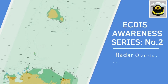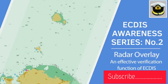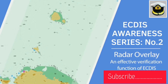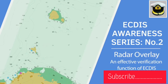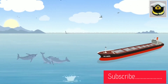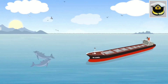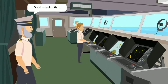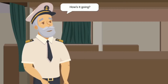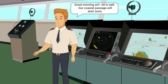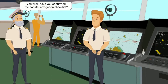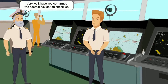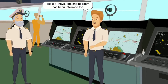ECTIS Awareness Series number two: Radar Overlay — an effective verification function of ECTIS. Good morning, Third. How's it going? Good morning, sir, all is well. Our coastal passage will start soon. Very well. Have you confirmed the coastal navigation checklist? Yes, sir, I have. The engine room has been informed too.